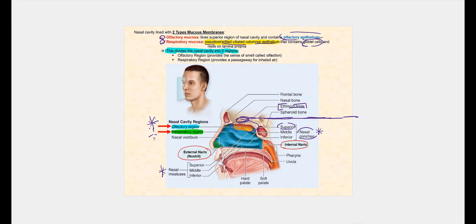To recap: we have the nasal vestibule leading into the nasal conchi and associated nasal meatus. When we leave the nasal cavity, we pass through the internal nares, which leads into the pharynx — the next component of the upper respiratory tract.